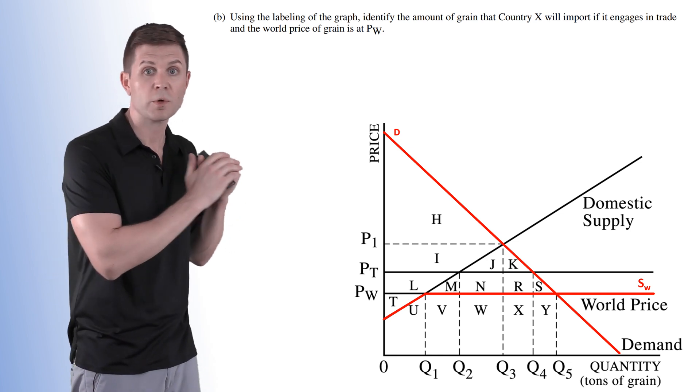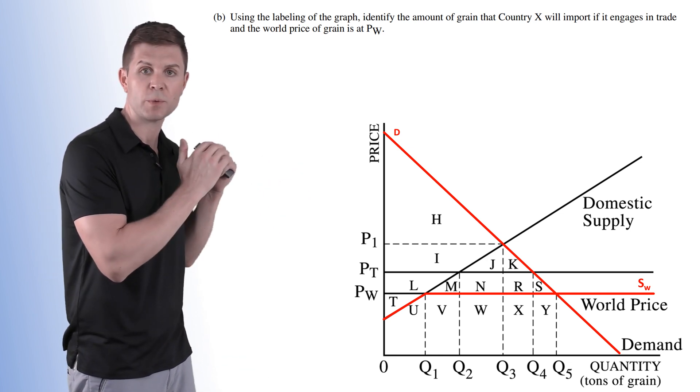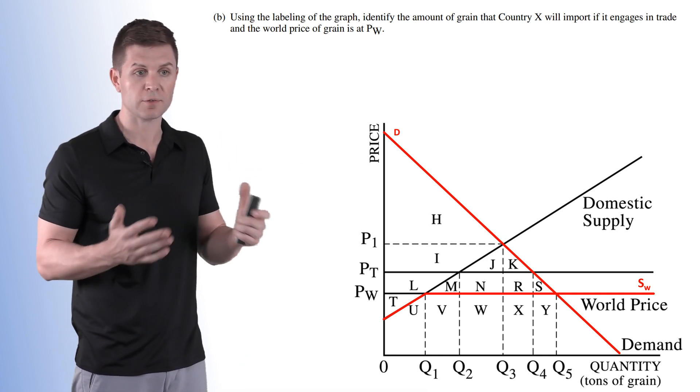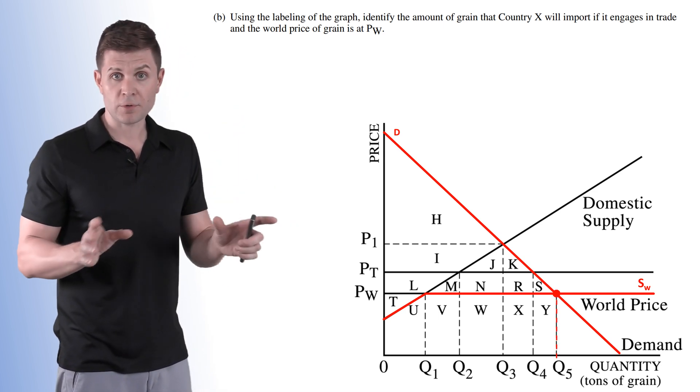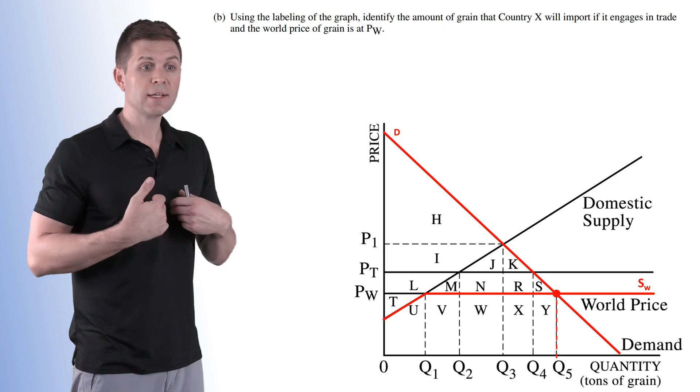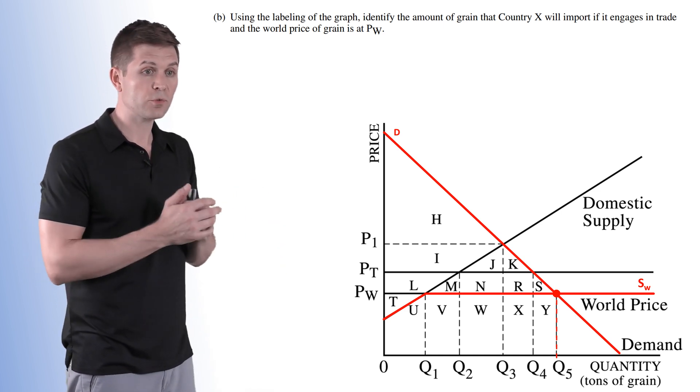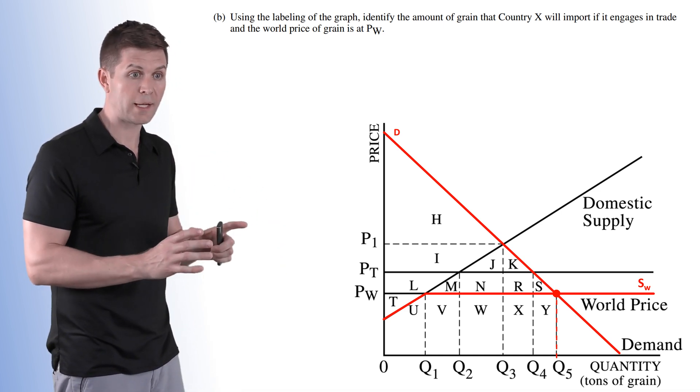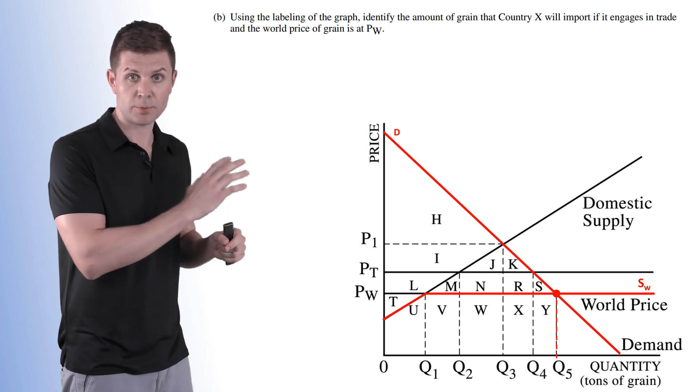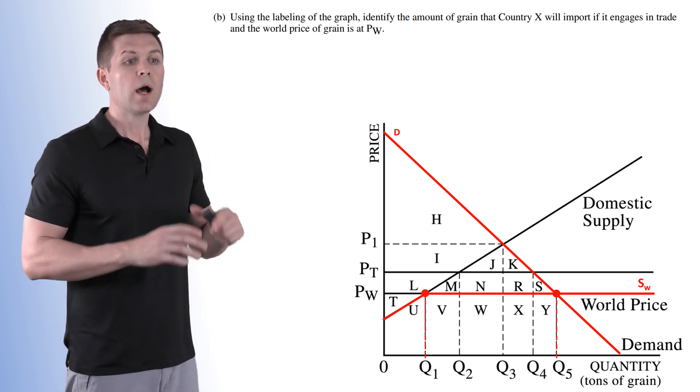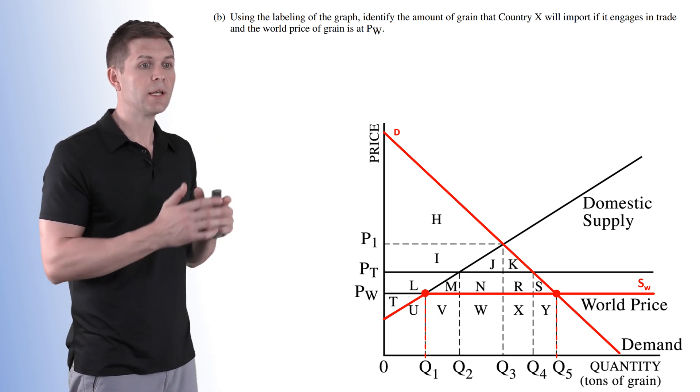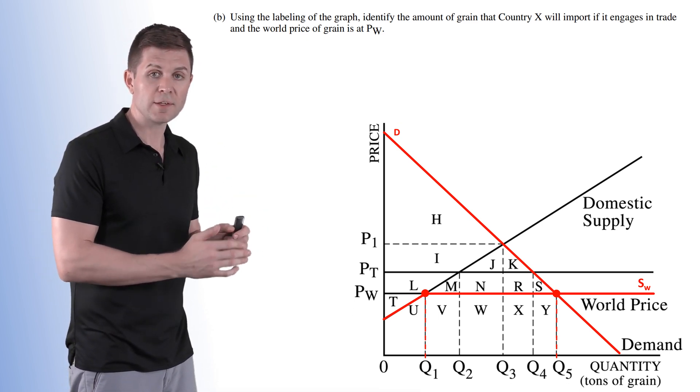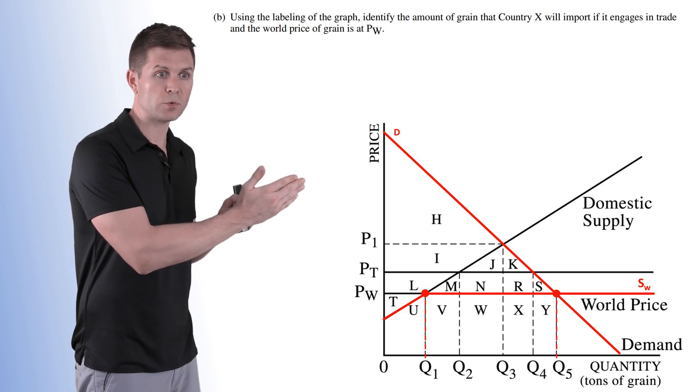Still domestic demand, and now we have our world supply curve. We have our upward sloping part which indicates our domestic supply and then the perfectly elastic part of the curve is the rest of what we're getting from the world. It's at the world price. We can get as much as we want at that price. So Q5 is our equilibrium. This indicates the quantity demanded.